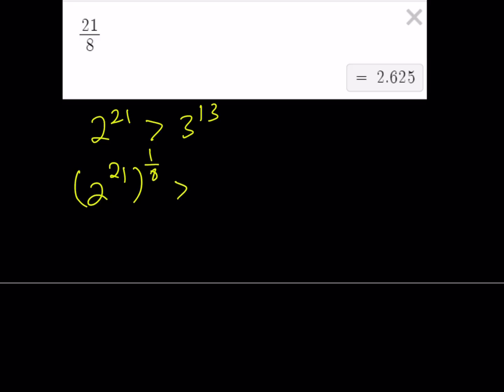That's why I do need to divide exponents by 8, which means that I'm basically raising both sides to the power of 1 eighth. And that can be done. Both sides are positive. It's all good. And I can basically take the 8th root of both sides. It's allowed, right? So this gives me 2 to the power of 21 eighths is greater than 3 to the power of 13 eighths. Awesome.